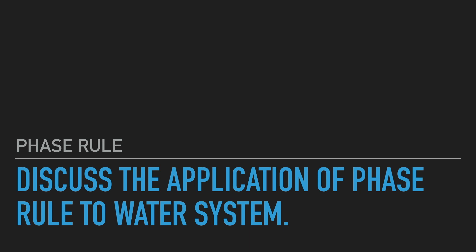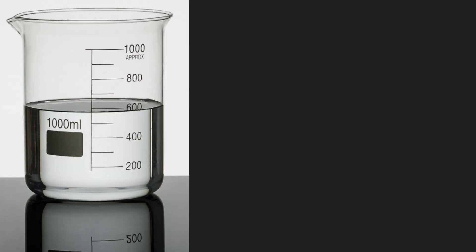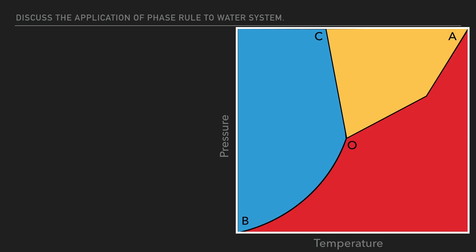Discuss the application of phase rule to water system. Water is one component system. Water can exist in three possible phases called ice, water and vapor, that is solid, liquid and gas.